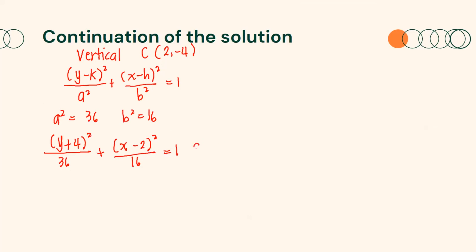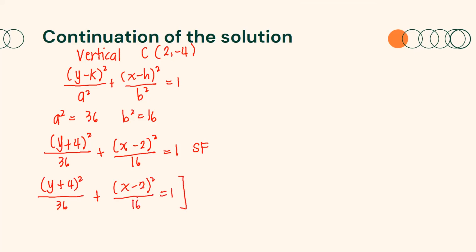Writing the equation in general form, we need to multiply the whole equation by the least common denominator. The least common denominator of 36 and 16 is 576. So we will have (y + 4)² over 36 plus (x − 2)² over 16 equals 1, all multiplied by 576.